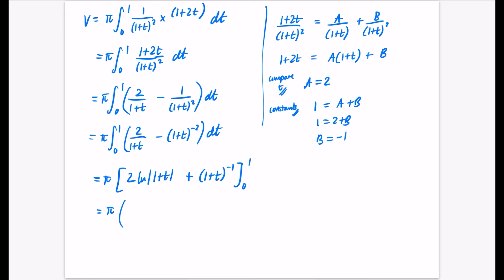So when I put in 1 first, that's going to be 2ln2 plus 1 plus 1, that's 2 to the minus 1, that's a half. And then I'm subtracting 2ln1 subtract 1 to the power of minus 1 which is just 1. So that is π(2ln2). This is 0 and a half minus 1 is minus a half. So I'm happy to leave it as π(2ln2 minus a half). And the units would be units cubed.